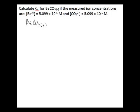Then you're measuring the concentrations of ions present, which are given here as barium ion being 5.099 times 10 to the negative 5 moles per liter and the same concentration for the carbonate ion.